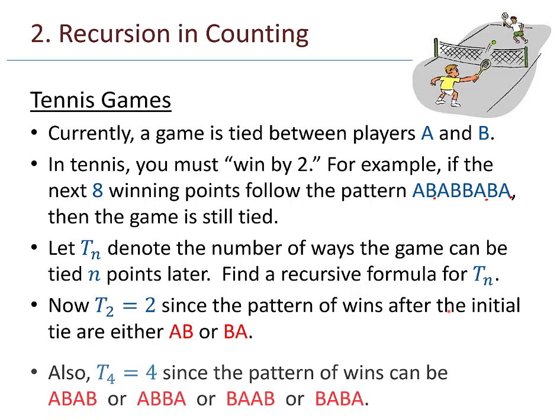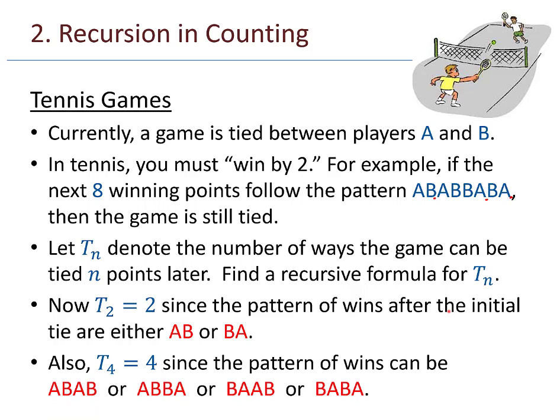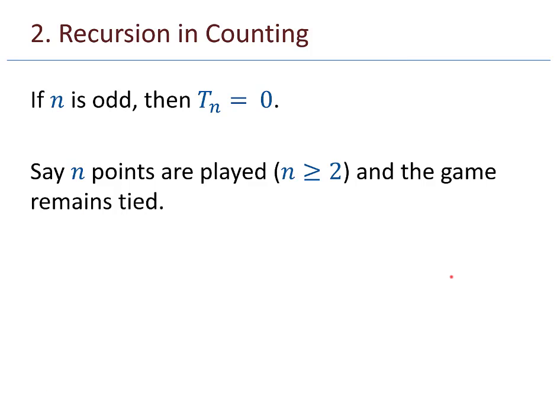What about t_4? How many ways can the game be played so that it's still tied 4 points later? The patterns are: ABAB, ABBA, BAAB, or BABA — those are the only 4 possibilities. Also notice that if n is odd, then t_n equals 0: we can't be tied an odd number of points later.